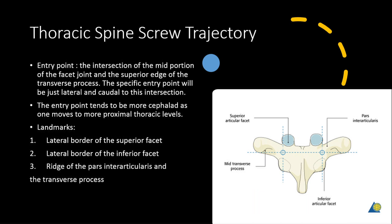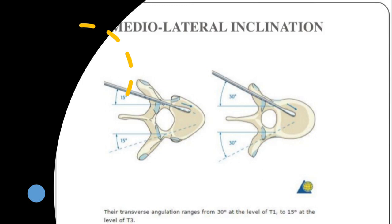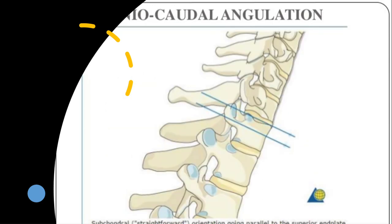In the thoracic spine, as you can see from the AO book, the main landmark is the lateral border of the superior facet, the lateral border of the inferior facet, and the ridge of the pars inter-articularis and the transverse process. When you have these landmarks shown on the sawbone model, if you draw a line lateral to the superior articular facet going through the transverse process to the midpoint of the inferior articularis, this is the point in the thoracic spine where you should be putting in your screw.